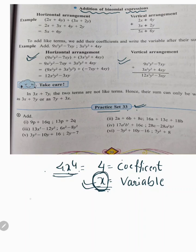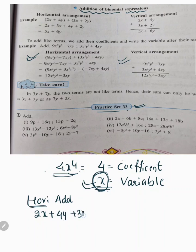Here horizontal addition means terms taken side by side. Let us take one example: 2x plus 4y plus 3x plus 2y.